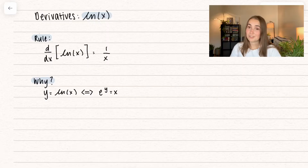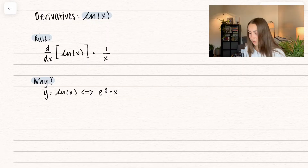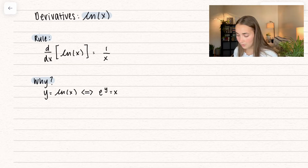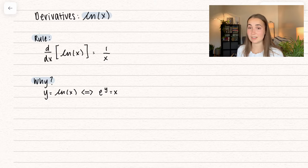It's like 100 degrees here today and I'm really hot, so rosy cheeks. Okay, so here's our rule: the derivative of natural log of x is equal to 1 over x.